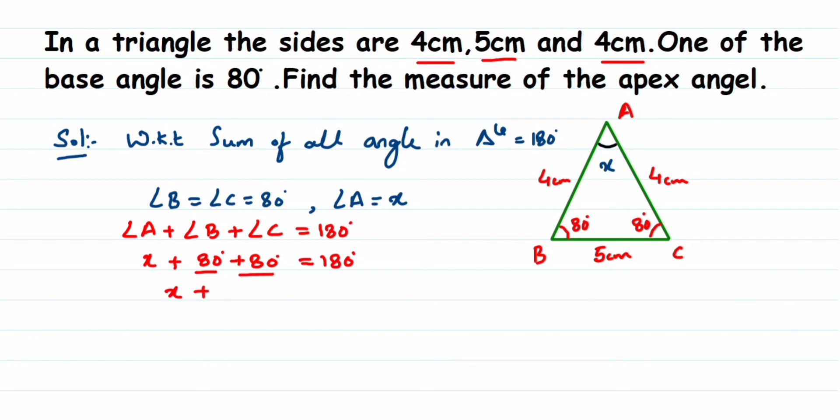Now add the constants here. Here I have 80 and 80. Add them, we'll get 160. So x plus 160 degrees is equal to 180 degrees. Now transpose 160 to the other side because you want the value of x. So x will be equal to 180 degrees minus 160 degrees.